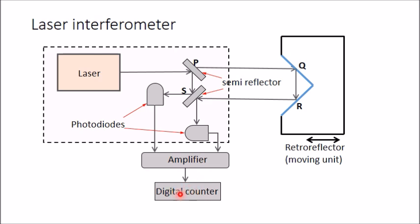This digital counter counts the number of dark and light bands during the movement of the retro-reflector. It is calibrated to convert this into the distance traveled by the retro-reflector. In this way, whatever distance is traveled by this retro-reflector mounted on a slide will be determined through this digital counter.